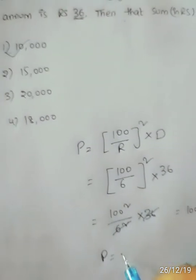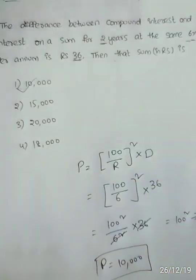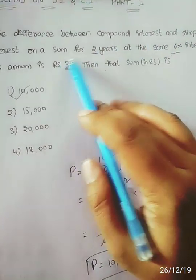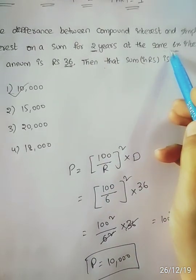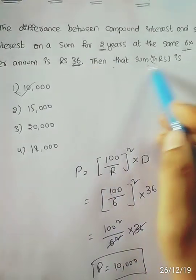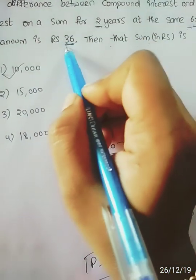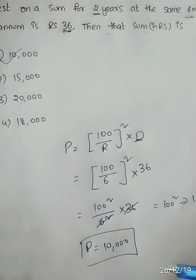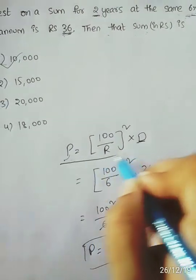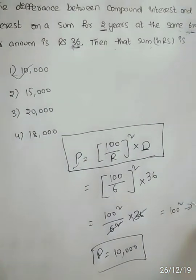Option one is the correct answer. For the first question, we have Simple Interest and Compound Interest for 2 years at the same 6% rate. The difference is Rs. 36, and we need to find the principal amount. Using P = (100/R)² × D, we substitute the values and within seconds we solve the answer.